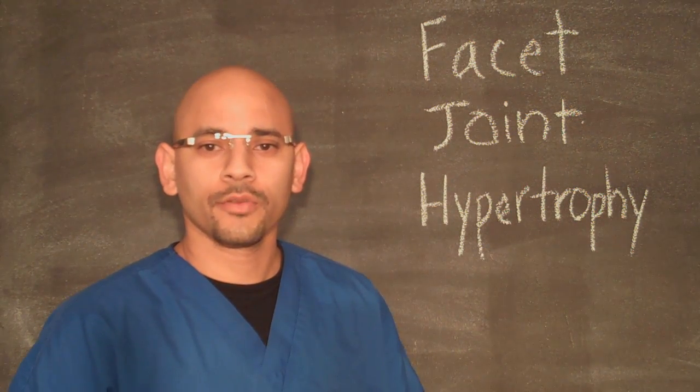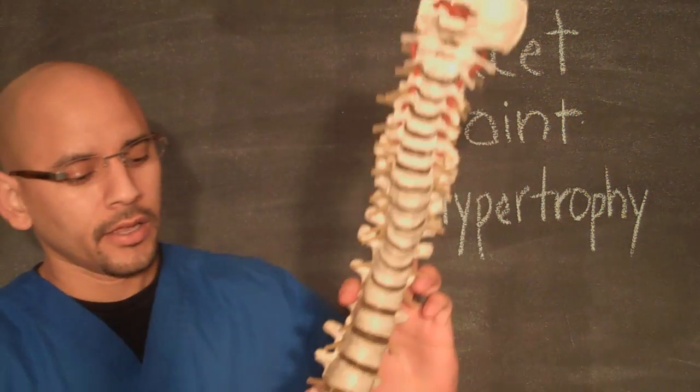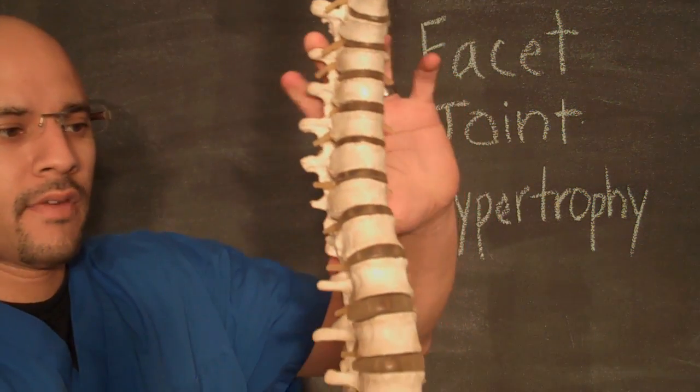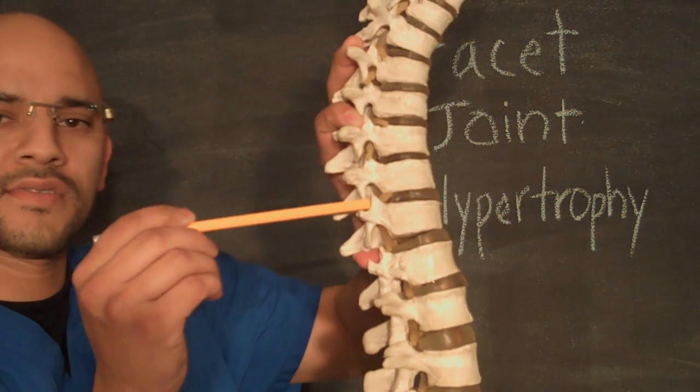Facet joints connect one vertebra to the other throughout the spine and allow us to bend and turn. If we look at the model of the spine here, I'm going to show you one vertebra right on top of the other and if I turn this sideways, that vertebra is connected through this joint to that vertebra. This is a facet joint.